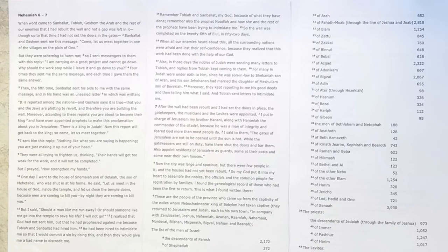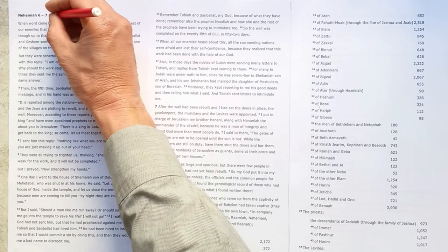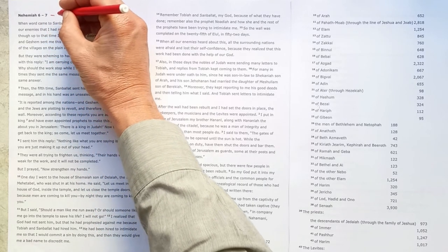In our journey through Nehemiah, we've made it to chapters 6 and 7. It really is a climactic moment as we'll see the wall in Jerusalem being completed. But what we'll see is that it's not the end of the story. There's more to be done because God's people now need to be rebuilt. I called my sermon from this section 'Success in Spite of Opposition.'